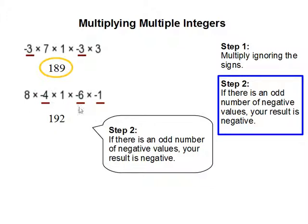And in this case below here, there are 3 negative values. So our resulting answer is a negative answer. So our answer would be negative 192. And this completes our problem.